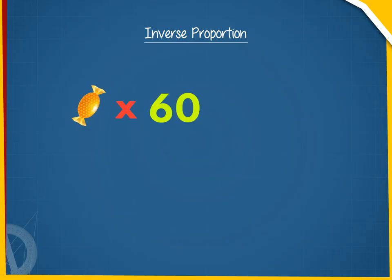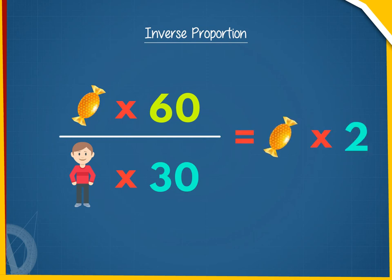Suppose we have 60 toffees and we wish to distribute these toffees equally among a certain number of children. If the number of children is 30, obviously each child will get 2 toffees.